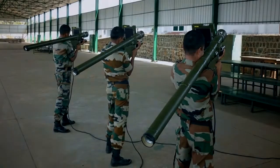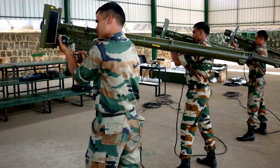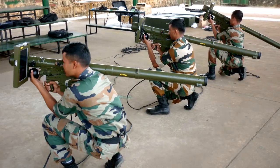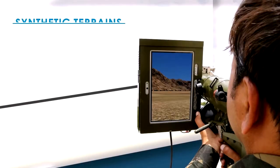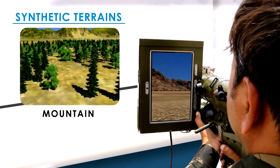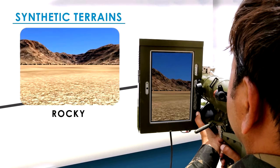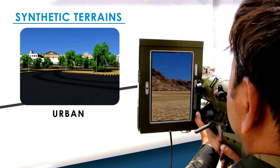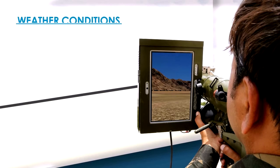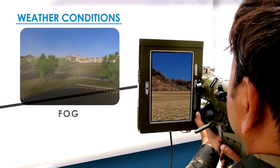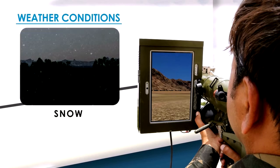In Mode 1, the instructor can select different types of targets and different terrains through the software. Various environmental conditions like rain, fog and snow can also be selected. Synthetic terrain options include mountain, desert, range, rocky and urban environments.